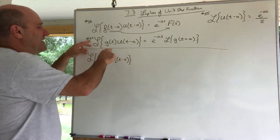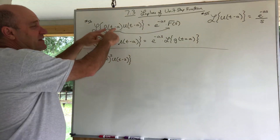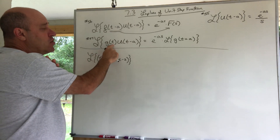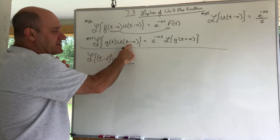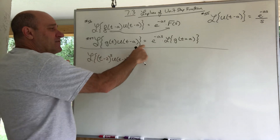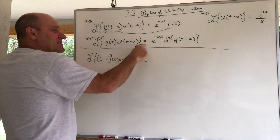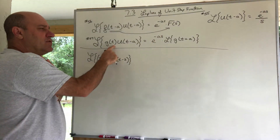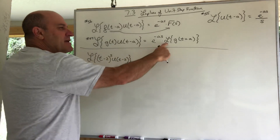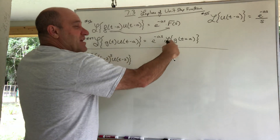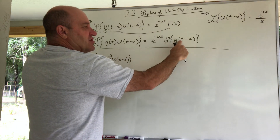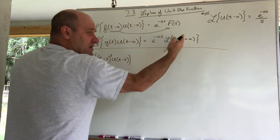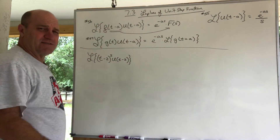If the argument doesn't match — if it's some g(t) whose argument doesn't match the unit step function — then you use rule 57. You still get the e to the negative as factor from the unit step function, but then you have to take the Laplace of g(t+a), shifting the function the other way.